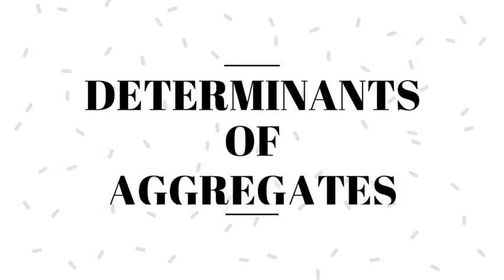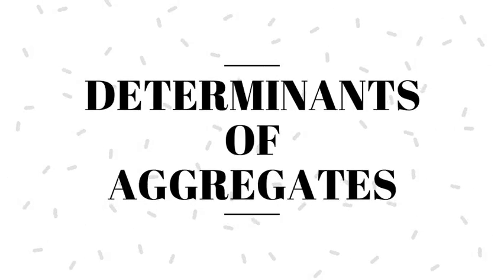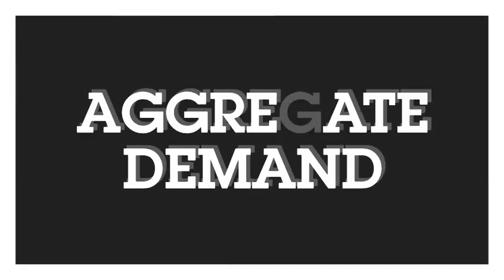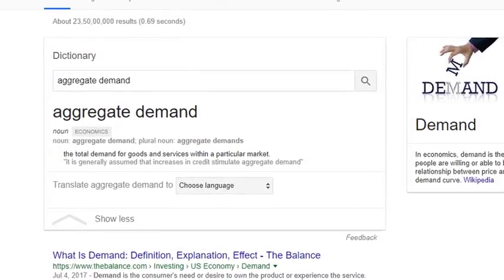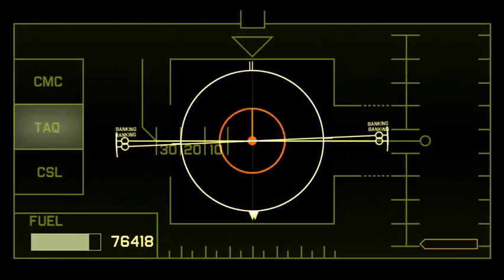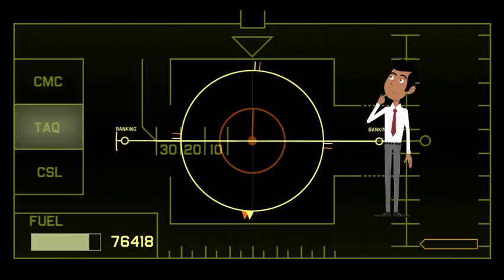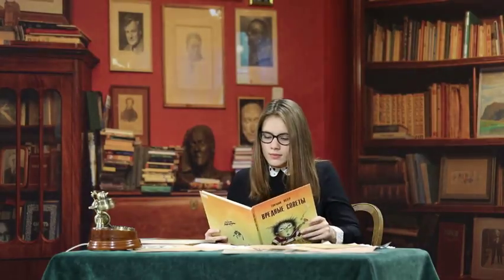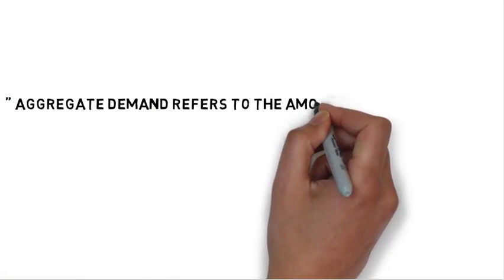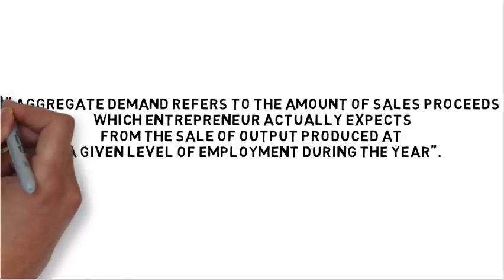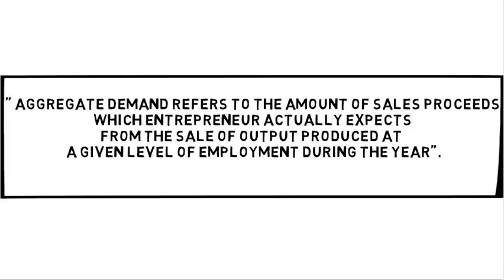Let's study a few determinants of aggregates. Let's start by understanding what aggregate demand is. The way Google defines it is that it is a total demand for all goods and services within a particular market. However, this definition does not help us understand how demand is measured. Hence in any standard book, you'll find aggregate demand defined as: aggregate demand refers to the amount of sales proceeds which the entrepreneur actually expects from the sale of output produced at a given level of employment during the year.